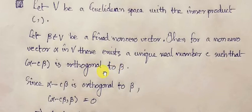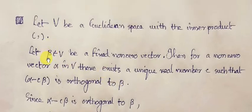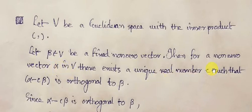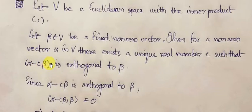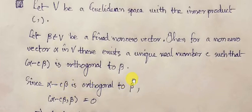Here beta is considered as the fixed vector, and alpha is any other vector from V. For this alpha vector, we can find a scalar C for which alpha minus C*beta is orthogonal to beta.